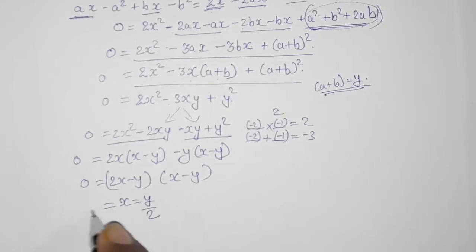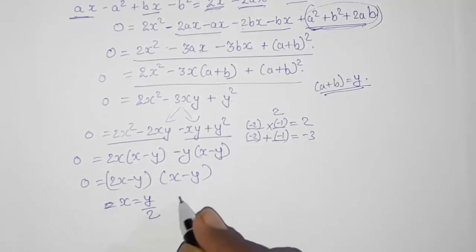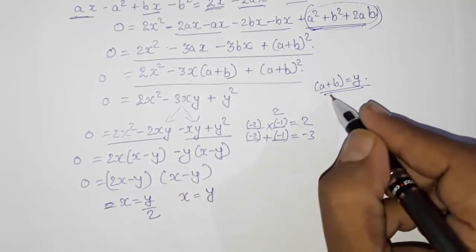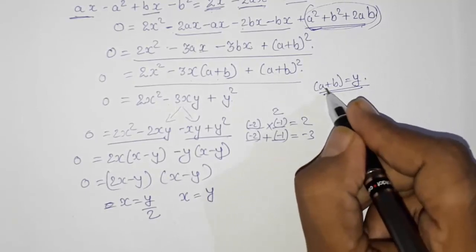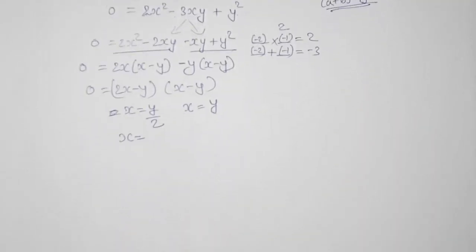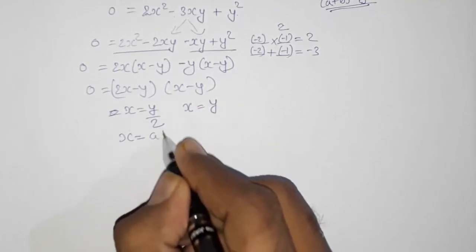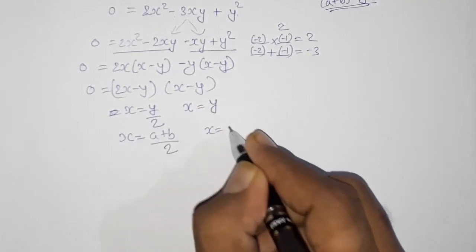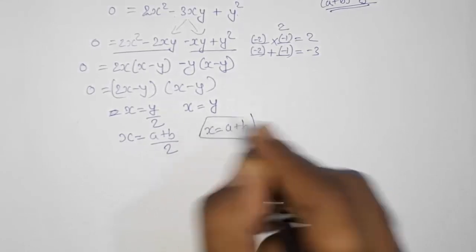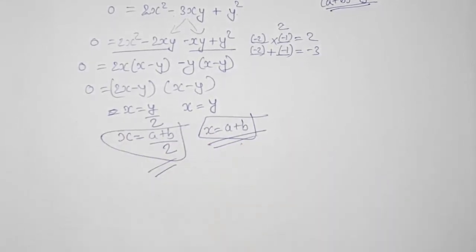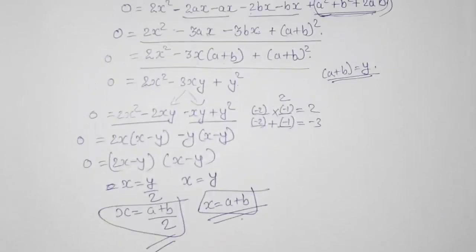From this: x equals y by 2 or x equals y. Substituting back y equals (a plus b): x equals (a plus b) by 2 or x equals (a plus b). This is how you solve this type of sum.